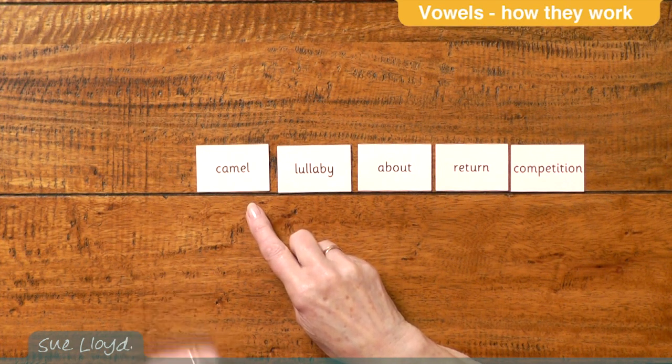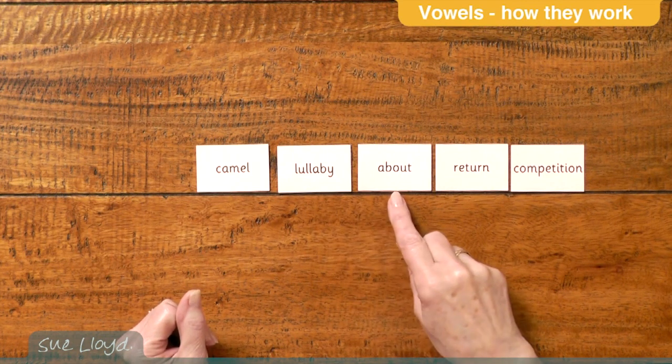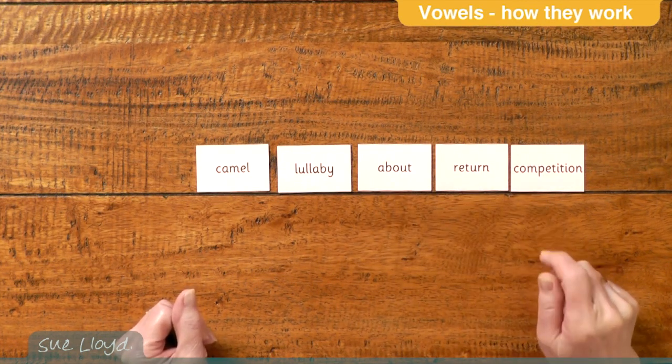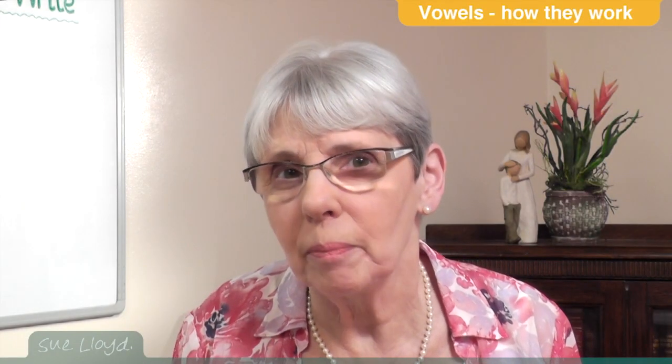I must remember the e. Lullaby - it's the a I've got to remember. About, return, competition - I must remember that. The children who read a great deal often pick up this type